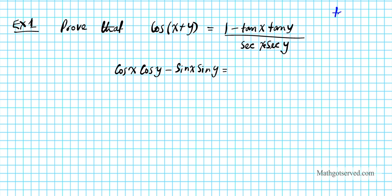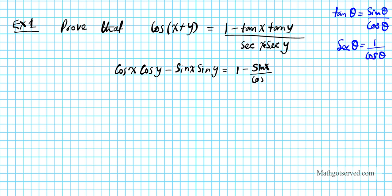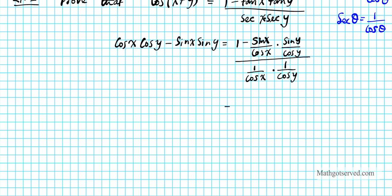Recall that tan θ equals sine θ over cosine θ, and secant is a reciprocal trig function equal to 1 over cosine θ. Using these identities, the right side becomes: 1 minus (sine x over cosine x)(sine y over cosine y), divided by (1 over cosine x)(1 over cosine y). Simplifying, that's 1 minus sine x sine y over cosine x cosine y, all divided by 1 over cosine x cosine y.